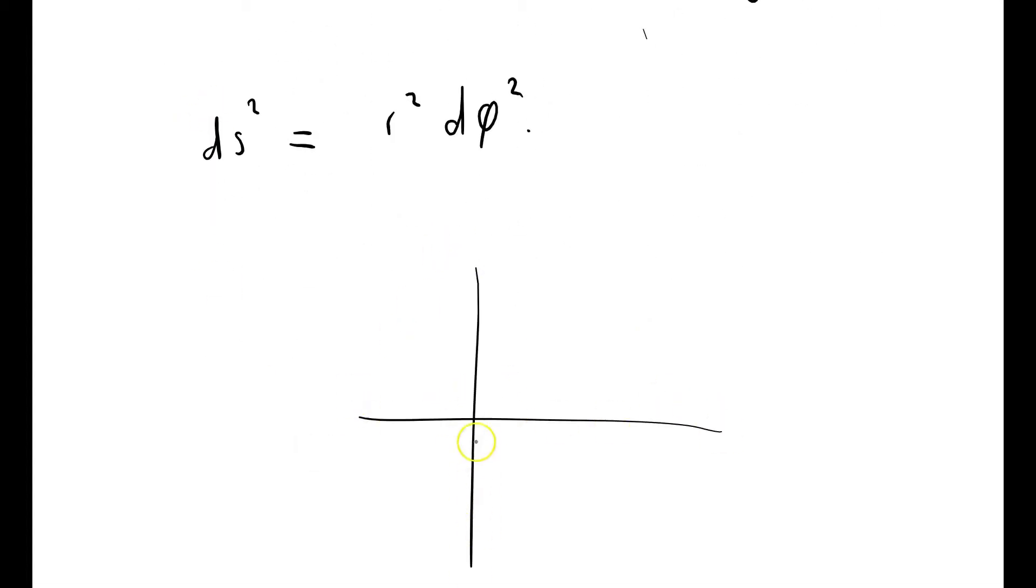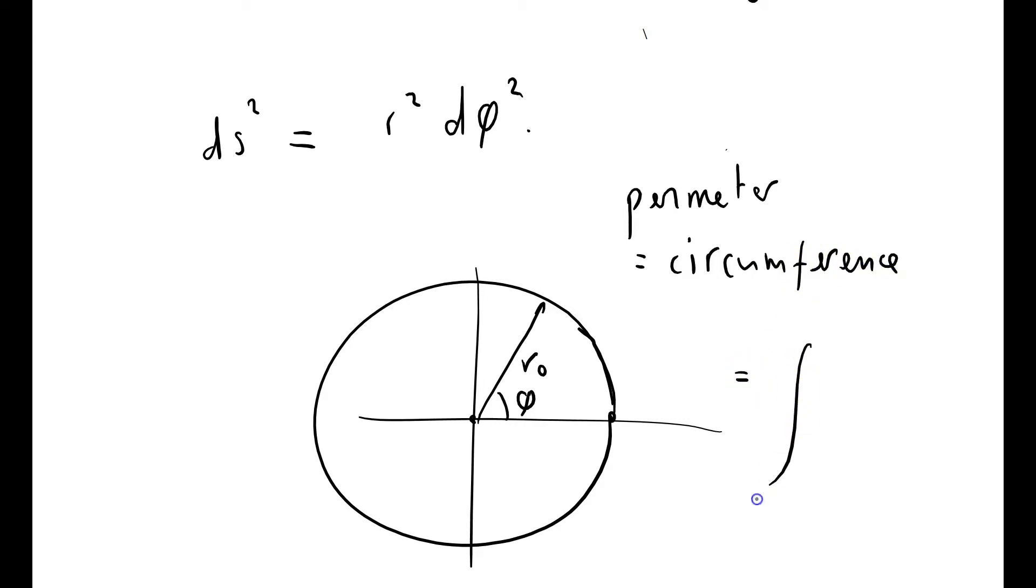So if I've got some nice coordinates here and I want to go round the radius of r0, that's phi, then the total perimeter, I guess you say circumference, equals the integral from phi equals 0 to 2 pi, if I want to go round and come back again.